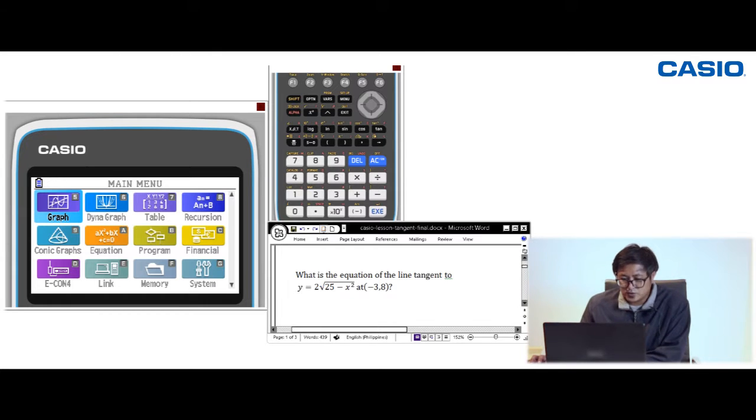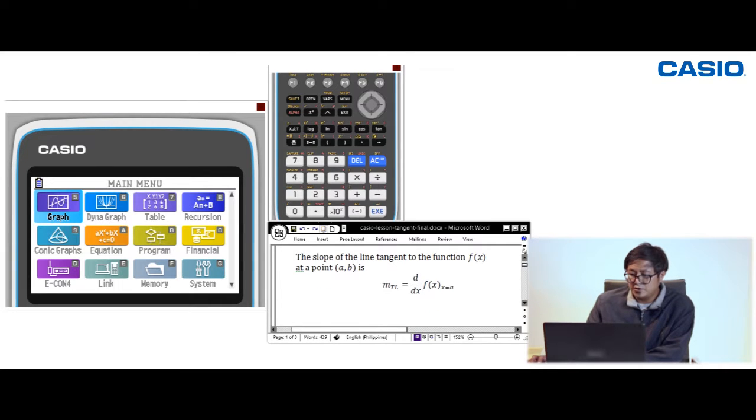First, it's important to notice that the given point (-3, 8) is a point on the curve. It's easy to see that if you substitute -3 for x, you'll get 8. To solve this, we need to get the slope of the tangent line as shown earlier: m_tl = d/dx f(x) at x = a.